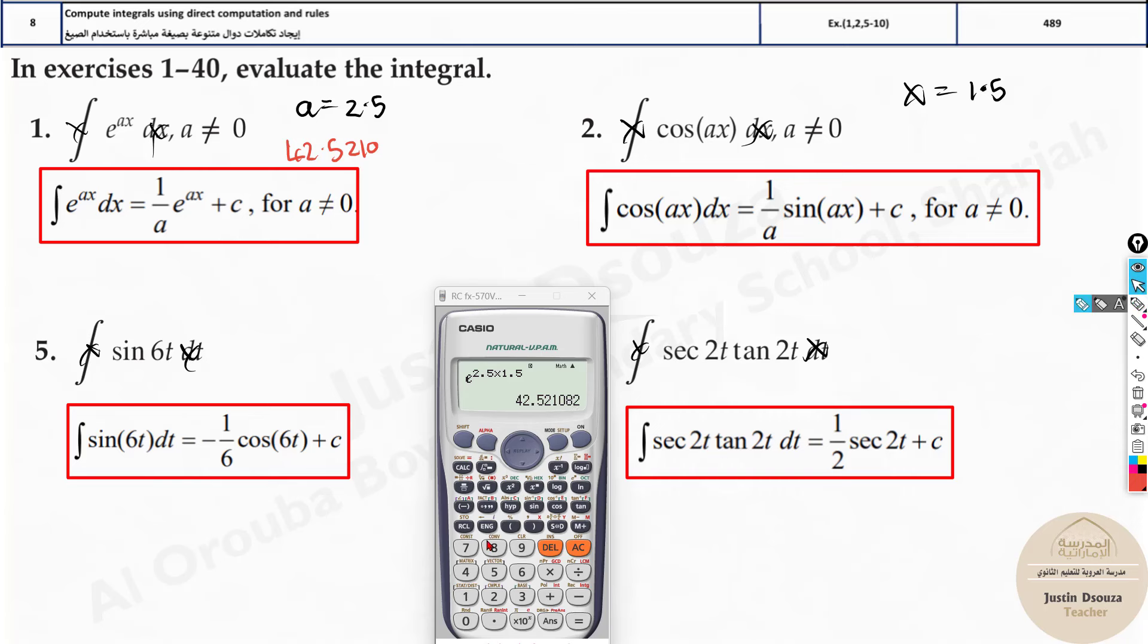Now then what you do is you will have 4 options. You need to differentiate all the options and then check which gives you this correct answer. Only one option can give you that.